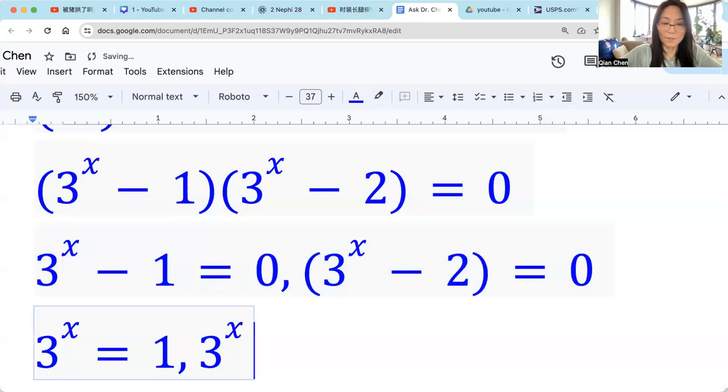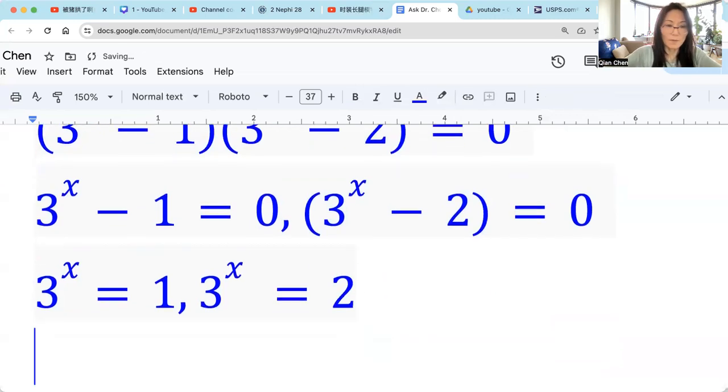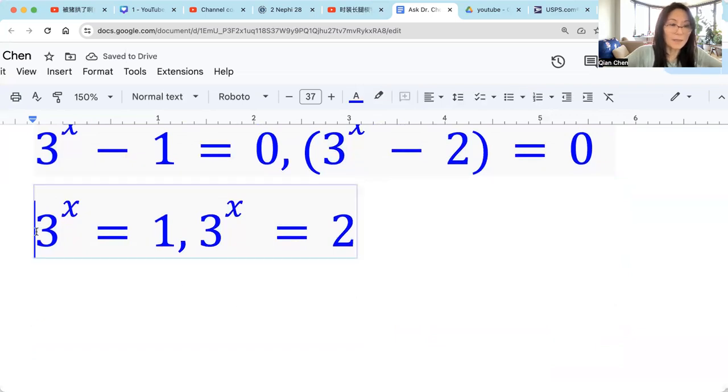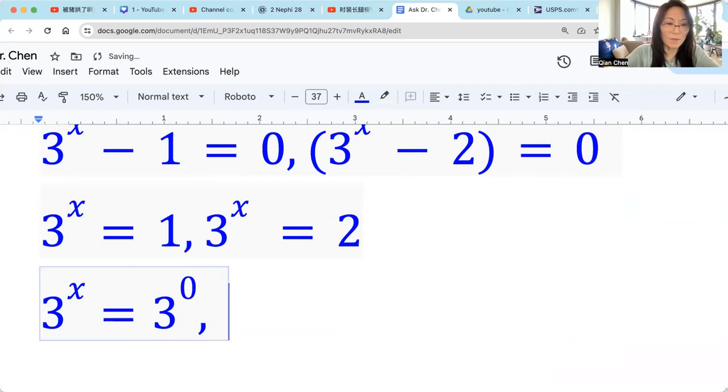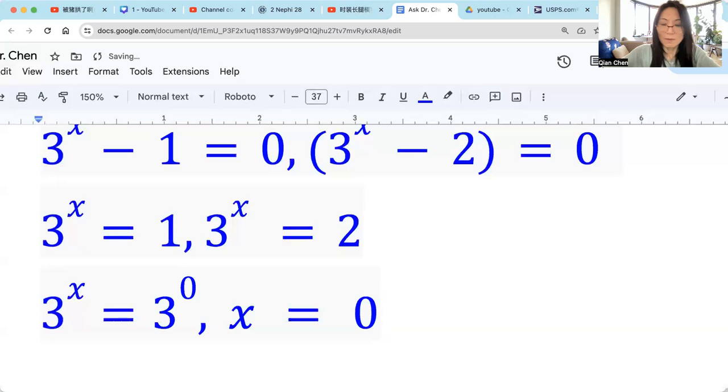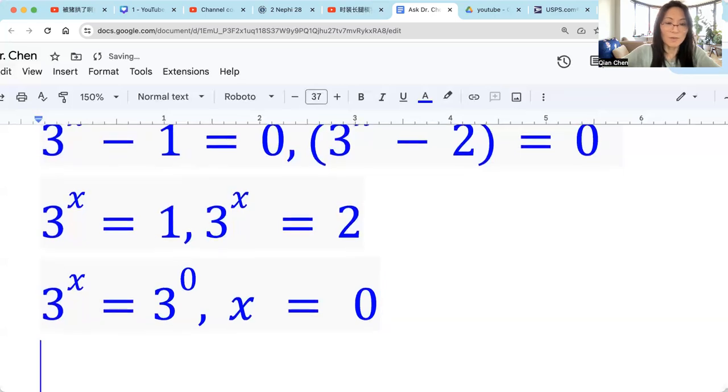And this one we have 3 raised by x equals to 2. Right. So these two equations. Equals to 2. 3 raised by x. Because 1 can be written as 3 raised by x equals to 1. 1 we can think as 3 raised by 0. Right. Anything raised by 0 power. The basis is the same. That forces x to be 0. So one solution is x equals to 0.